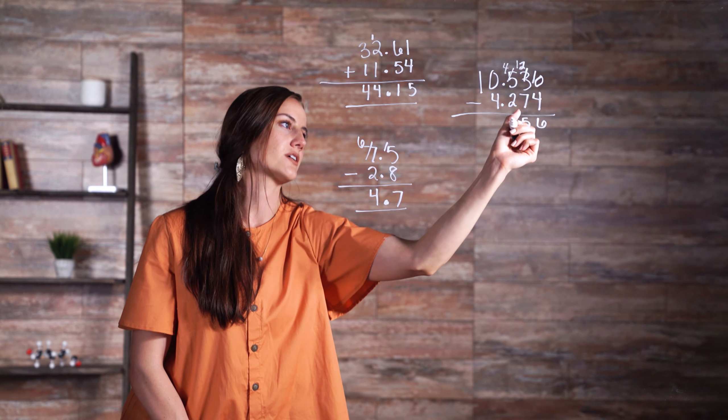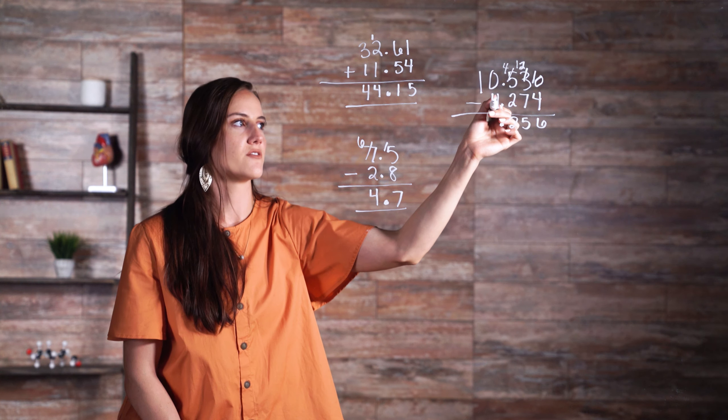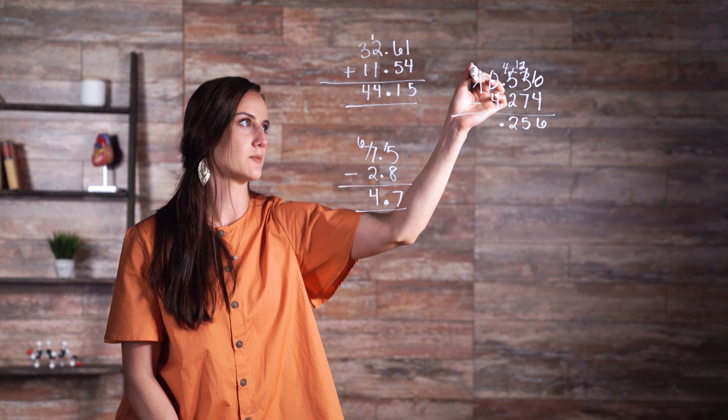And now we have 2 being subtracted from 4, which gives us 2, bringing down our decimal point. We have 4 being subtracted from 0, which we know does not work, so this becomes 0.